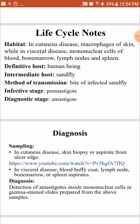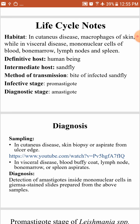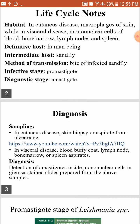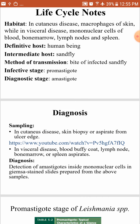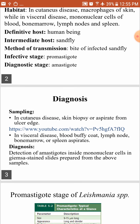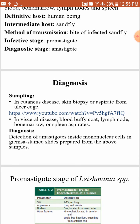Leishmania needs two hosts. The definitive host is the human being, while the intermediate host is the sandfly. The method of transmission is by the bite of an infected female sandfly. The infective stage is the promastigote, while the diagnostic stage is the amastigote.